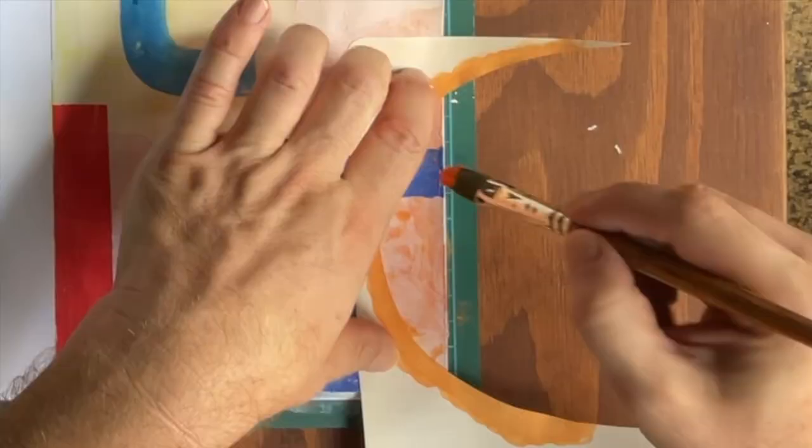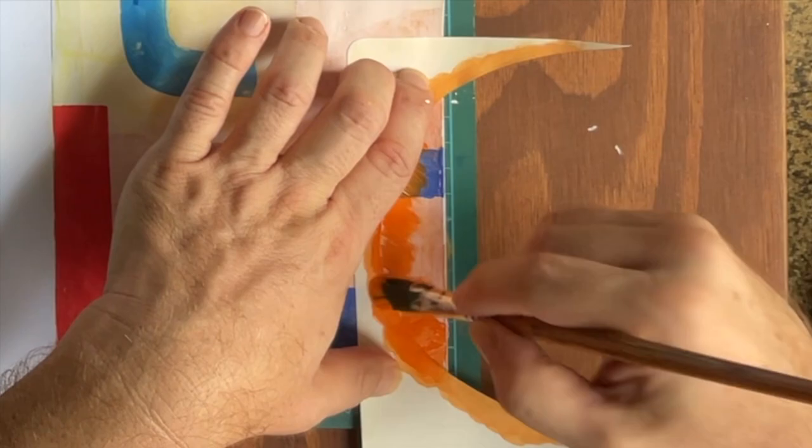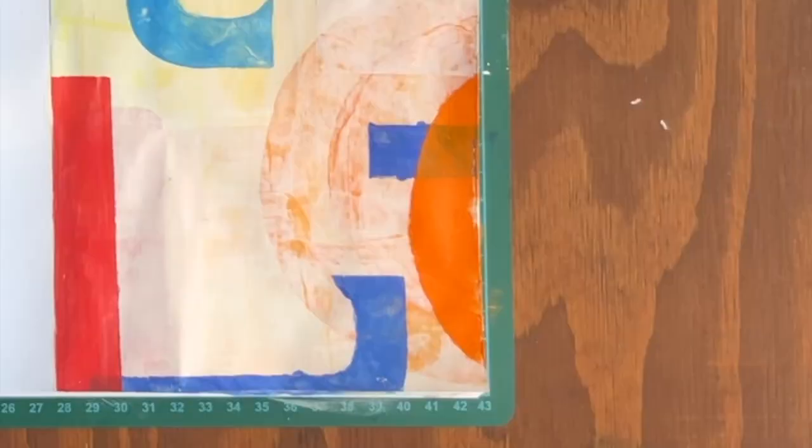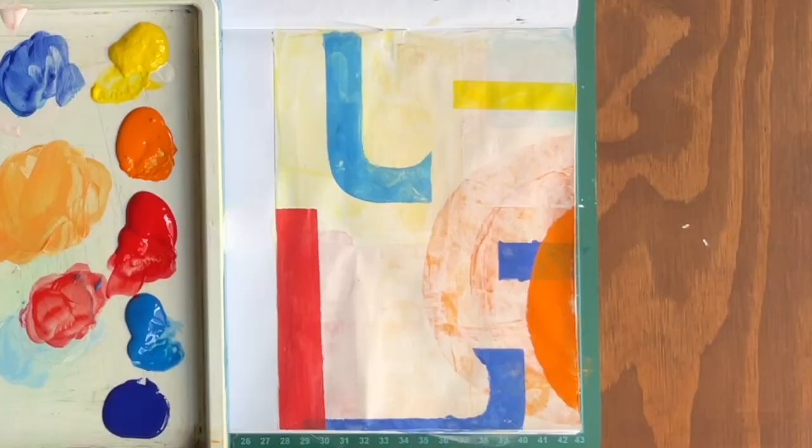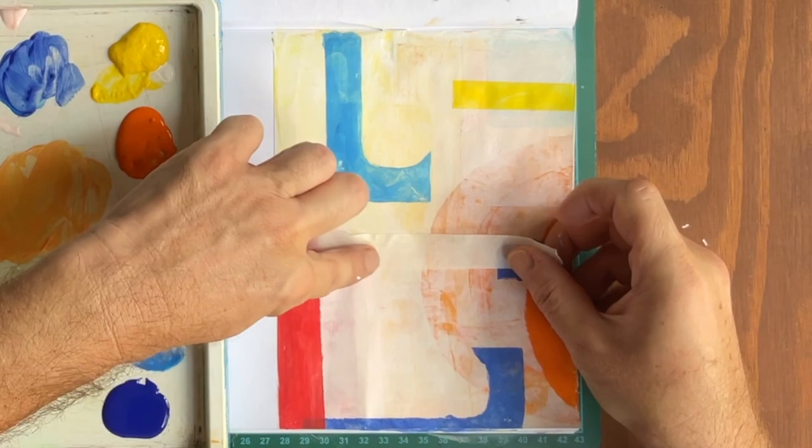I'll blow it dry and then wash my brush as well. I'm going to use that half circle cut out again and apply orange to it on the bottom right. Again, I paint along the edge, moving away from the paper so it doesn't bleed underneath. I then clean my brush and blow dry my work.